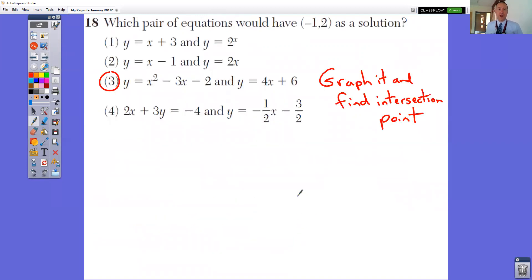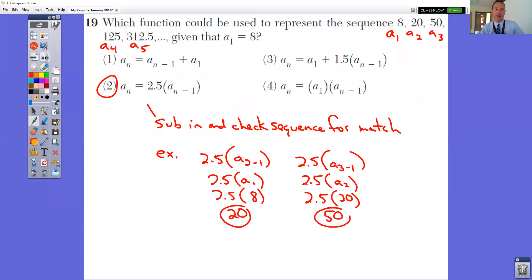Question number 18, which pair of equations would have negative 1, 2 as a solution? Just graph them. Graph them and find the intersection point. You want to see where the two lines cross at negative 1, 2. Remember, this is your X value, this is your Y value. So over to negative 1 and up to negative 2. So you're looking for like this point right here. So where do they have that same intersection point? When you graph 3, they cross right there.